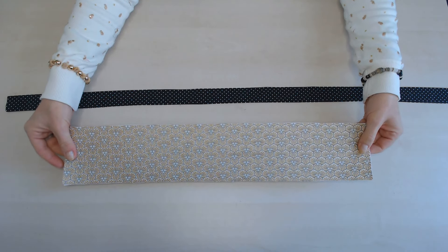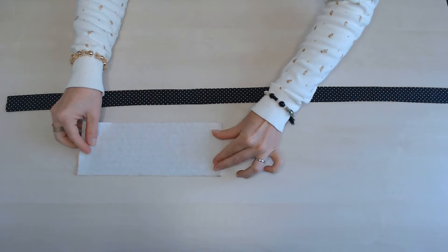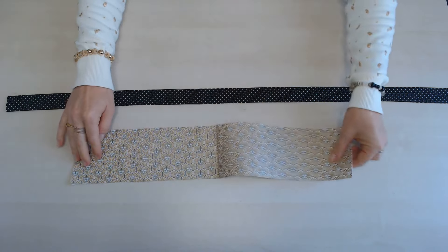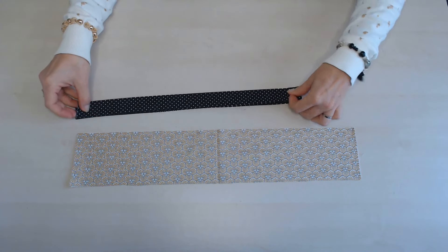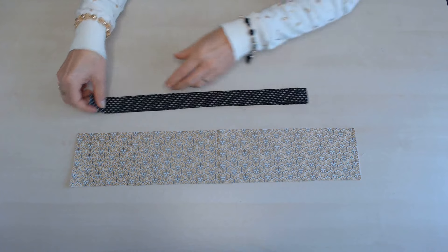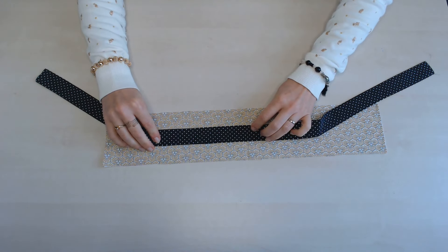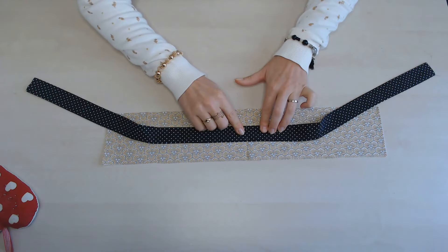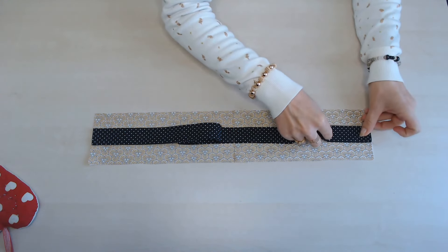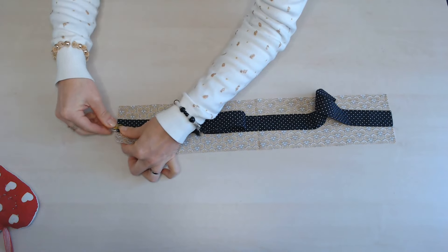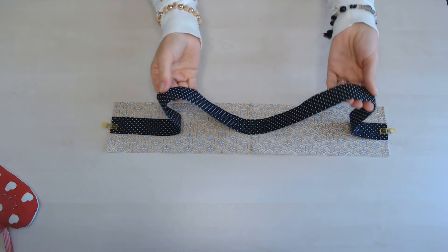Je prends la bande de 52 cm sur 10, la partie intérieure et je vais marquer le milieu. La bande que je viens de repasser, je marque également le milieu. Je fais correspondre mes deux repères et je place ma bande bien au centre. Je l'épingle et je vais épingler également les extrémités de chaque côté comme ça.